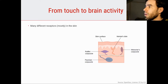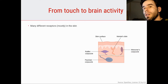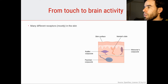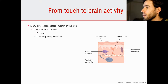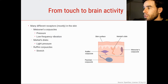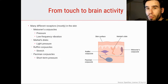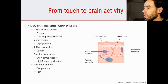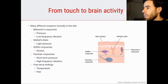There are many different receptors, mostly located in the skin, that sense these different aspects of touch. Here is a list of the different kinds of skin receptors. For example, Meissner's corpuscles, which are sensitive to pressure and low-frequency vibration. Merkel's discs, also sensitive to light pressure. Ruffini corpuscles — stretch, so a bending of the skin. Pacinian corpuscles — short-term pressure and high-frequency vibration. Free nerve endings, sensitive to temperature and pain. So all these different receptors are located in the skin and support different aspects of touch.